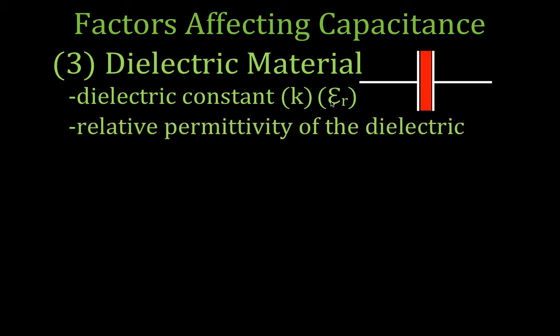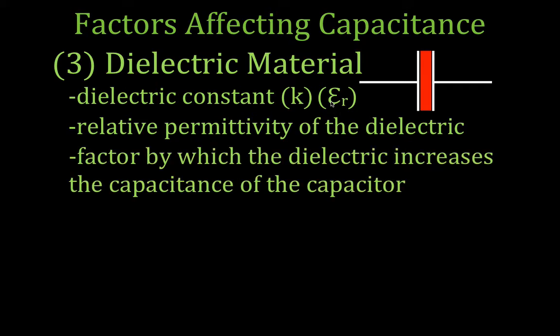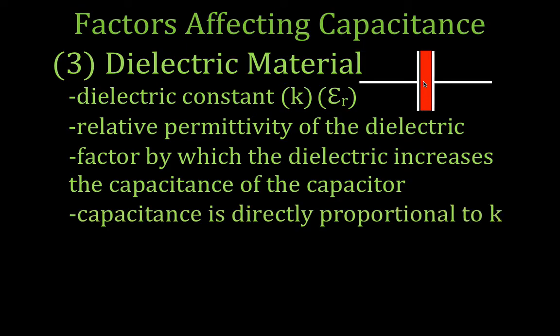The dielectric constant describes the relative permittivity of the dielectric. It is the factor by which the dielectric increases the capacitance of the capacitor. If you have a material that has a dielectric constant of 2, then it doubles the capacitance of the capacitor. If it has a dielectric constant of 3, then it triples, and so on. I like to think of it as describing how easy it is for the material in the dielectric to be polarized, because the greater the material can be polarized, the greater effect it has on the capacitance. The capacitance is therefore directly proportional to K.